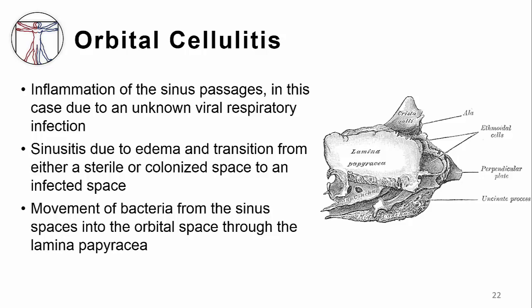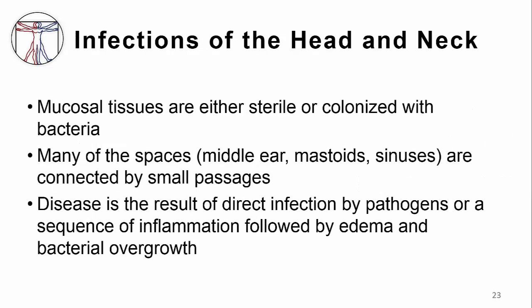What we see here is a very bad outcome of a very common infection. Through the course of this short module, we've seen a number of bad outcomes — retropharyngeal abscesses, mastoiditis, orbital cellulitis — all as a result of expansion of colonizing or pathogenic bacteria as a result of the cascade of inflammation, as opposed to necessarily direct infection. The take-home points are: mucosal tissues can either be sterile or colonized with bacteria; many of the spaces are connected by small passages which are prone to being closed down by inflammation, leading to fluid collections and overgrowth of bacteria; and disease can either be the result of direct infection by pathogens, as you see in pharyngitis, or a sequence of inflammation followed by edema and bacterial overgrowth, as you see with sinusitis. All of those processes can lead to very complicated and very difficult to treat outcomes.